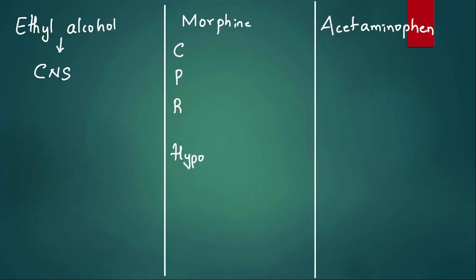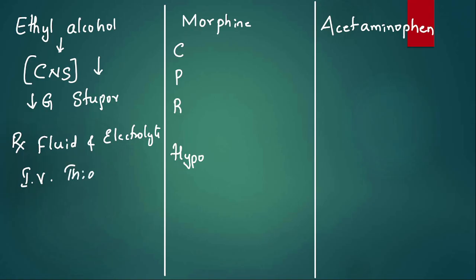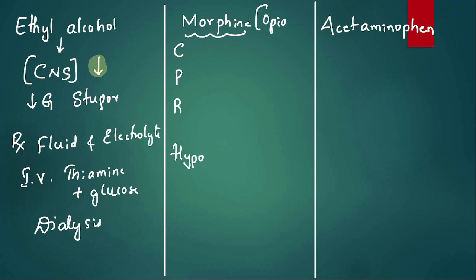Let us rule out the options one by one. Ethyl alcohol is a CNS depressant — intoxicated patients are drowsy, develop gastritis and hypoglycemia, may go into stupor, coma, and death. Treatment involves gastric lavage, IV fluids with electrolytes, IV thiamine plus IV glucose, and dialysis if needed. No specific pupil finding fits our case, so alcohol is ruled out. Morphine is an opioid — opioids cause miosis (pinpoint pupils), so this is also ruled out since our patient has dilated pupils.